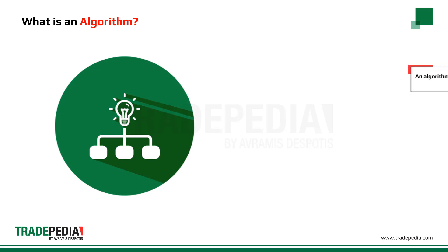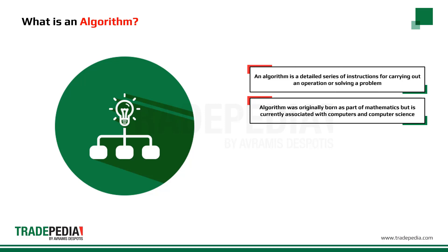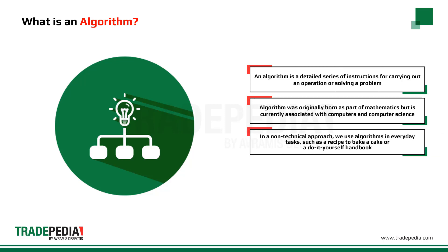An algorithm is a detailed series of instructions for carrying out an operation or solving a problem. Algorithm was originally born as part of mathematics but is currently associated with computers and computer science. In a non-technical approach, we use algorithms in everyday tasks such as a recipe to bake a cake or a do-it-yourself handbook.